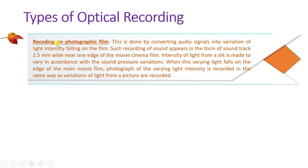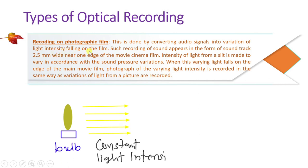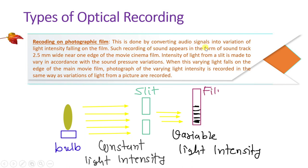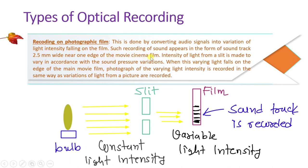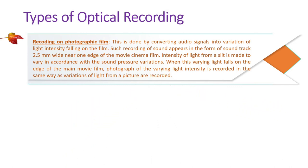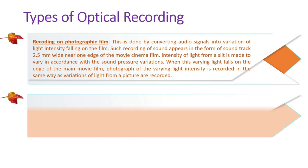There are basically two types of optical recording. The first is optical recording on photographic films, where we convert audio signals into variations of light intensity. That light intensity falls on the film, and the recording appears as a soundtrack 2.5 mm wide near one edge of a movie cinema film.